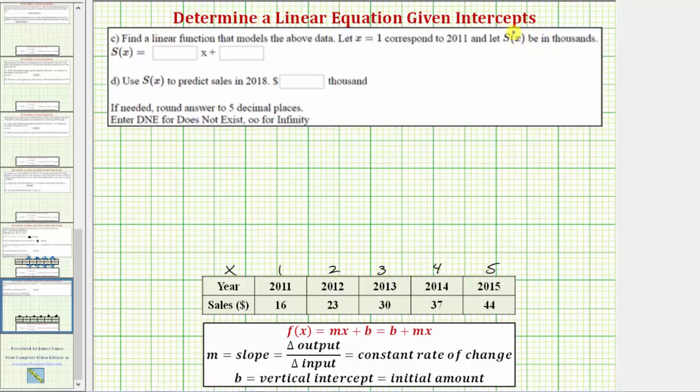Often a linear function is in the form f(x) = mx + b, but because our function is S(x), our function will be in the form S(x) = mx + b, where m equals the slope, which equals the constant rate of change.